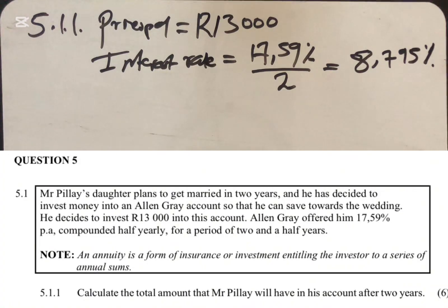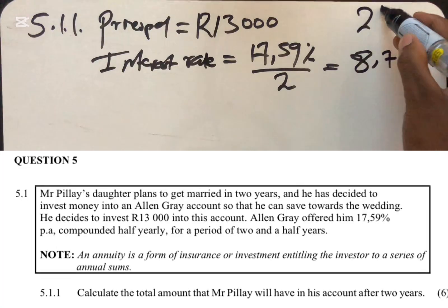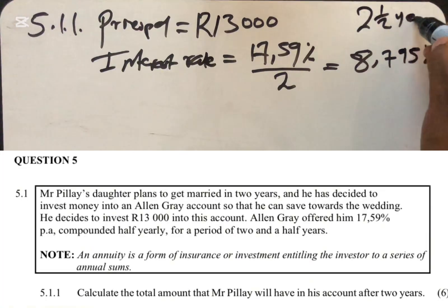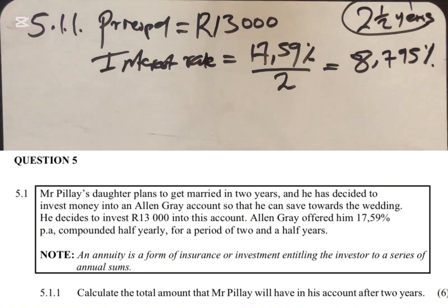So this is the information that we have. We know that this person has invested for two and a half years. The first question wants us to calculate the total amount that Mr. Pillay will have in his account after two years. The investment is for two and a half years, but we need to calculate what he'll have after two years.